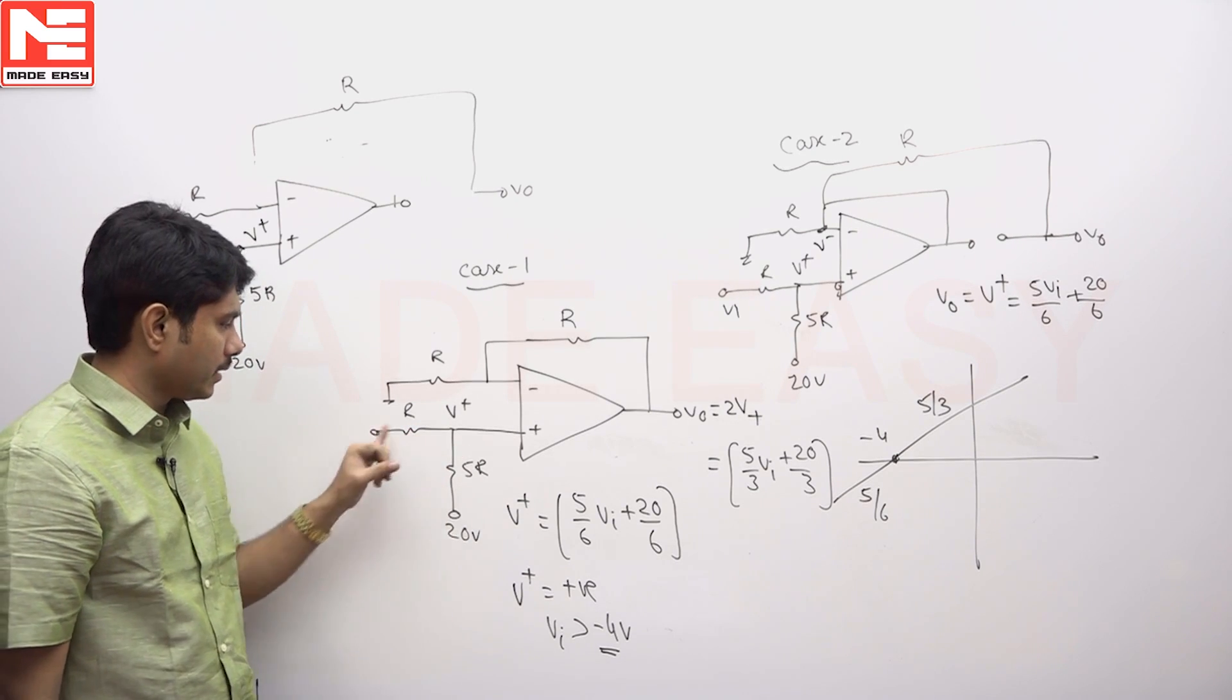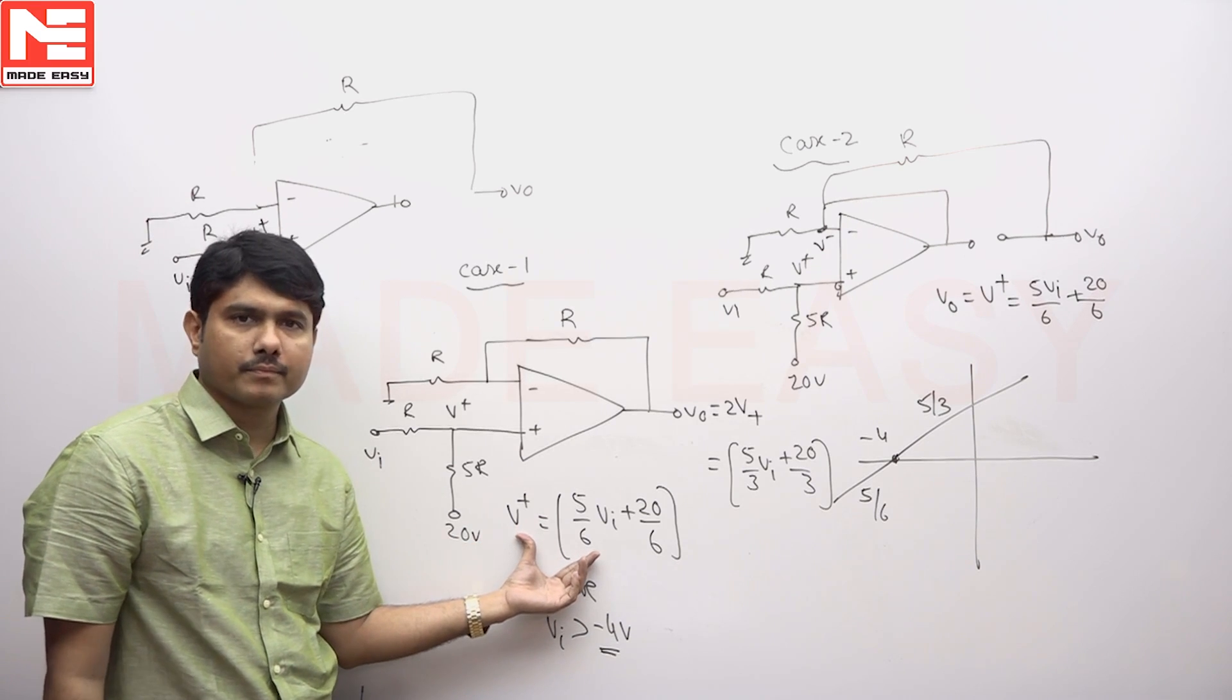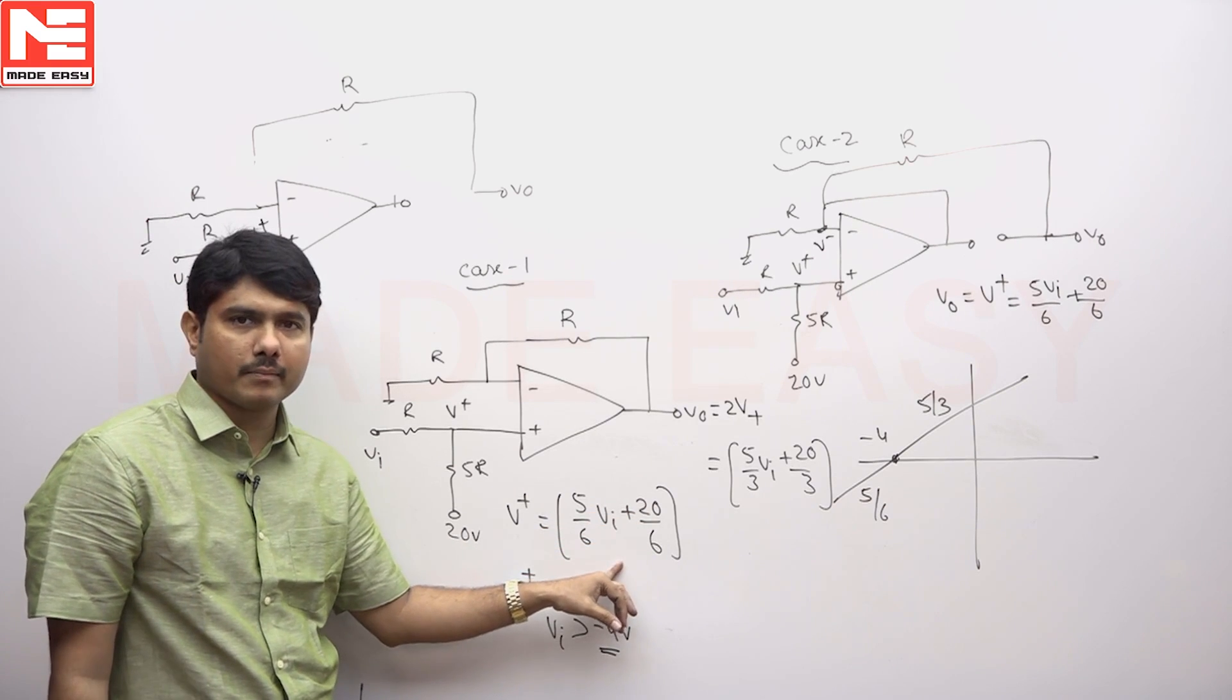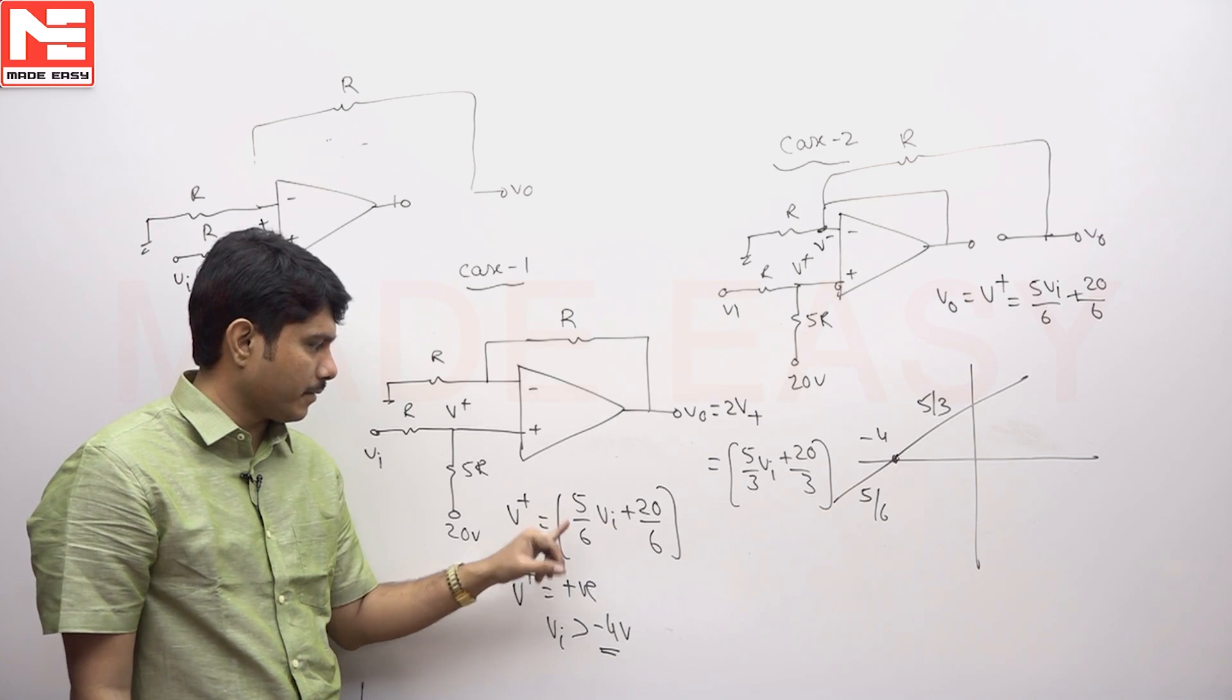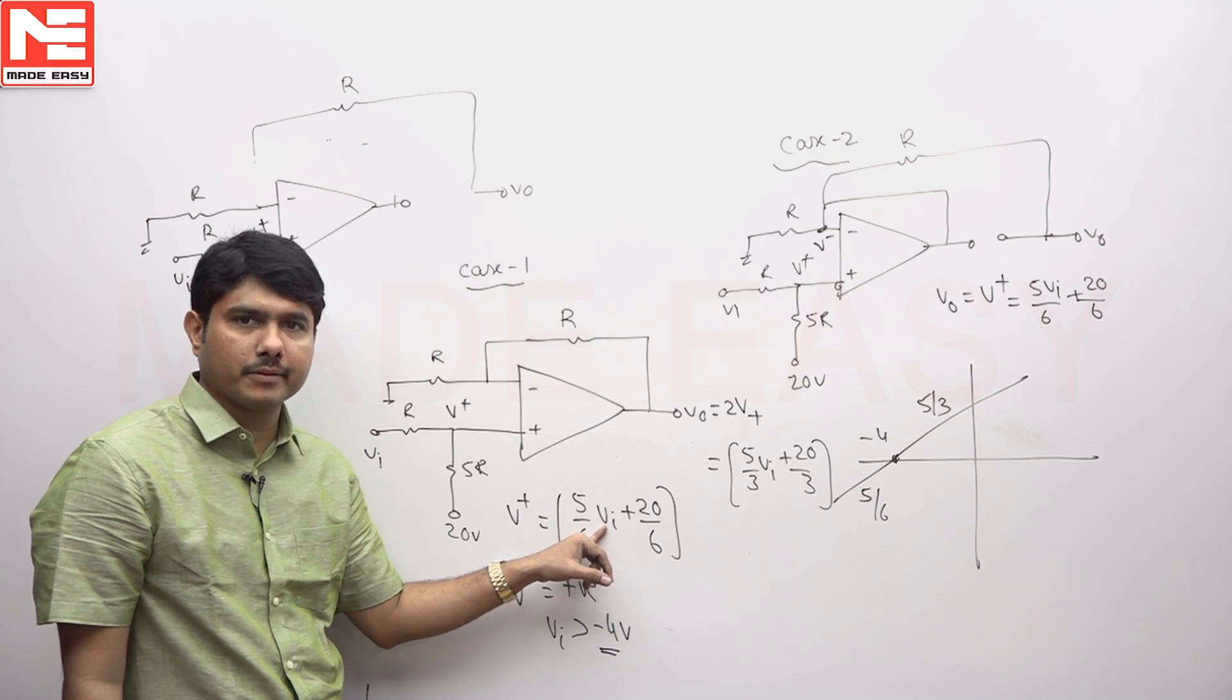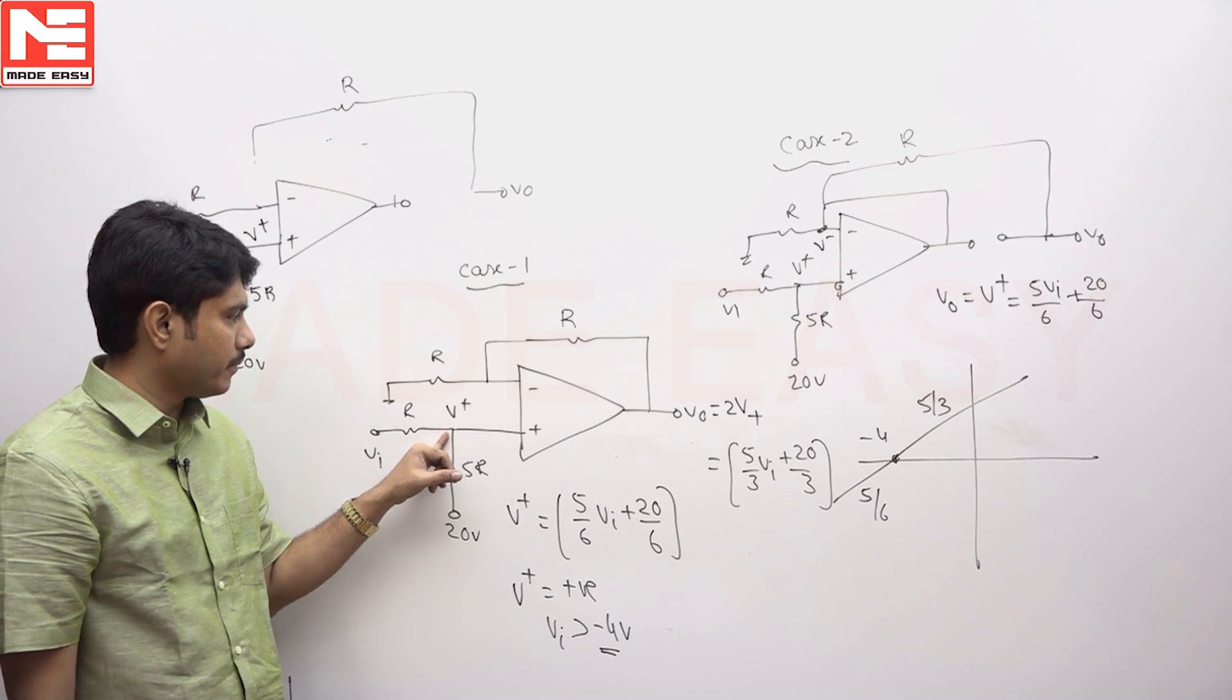If you solve this using superposition theorem, we get the result V plus as 5 by 6 into VI plus 20 by 6. So how much should VI be so that V plus will be zero?